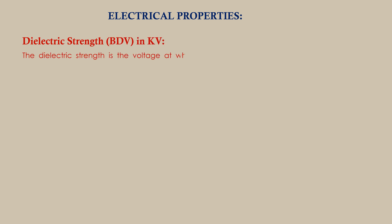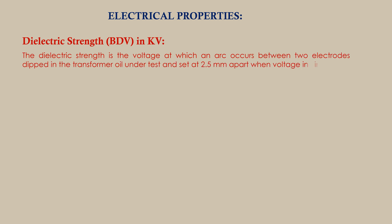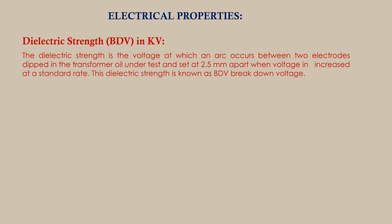Electrical properties — Dielectric strength BDV in kV: the dielectric strength is the voltage at which an arc occurs between two electrodes dipped in the transformer oil under test and set 2.5 mm apart, when voltage is increased at a standard rate. The dielectric strength is known as BDV, or breakdown voltage. Dry and clean transformer oil gives a higher BDV.